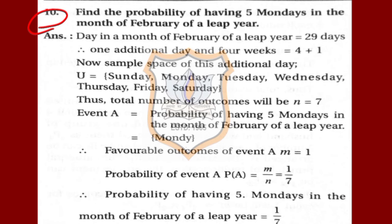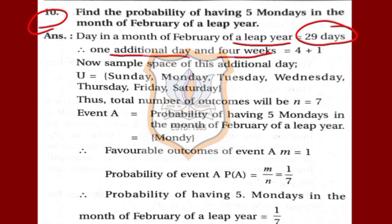Let us solve question number 10: find the probability of having 5 Mondays in the month of February of a leap year. A leap year has 29 days in February. Since 7 days make a week, 29 days = 4 weeks + 1 additional day. So there is one additional day beyond the guaranteed 4 weeks.